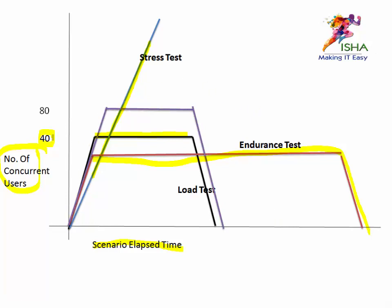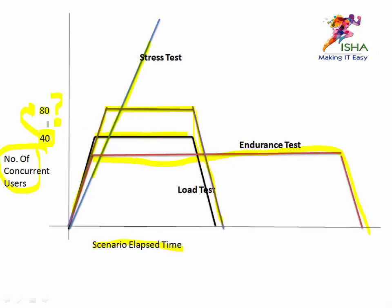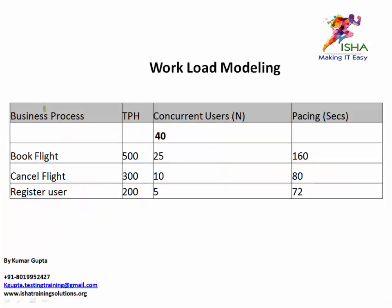Now the next test is the scalability test. As you can see, the load test runs with 40 users, and the scalability test runs with 80 users. Again, for the scalability test you have a ramp up, a steady state, and a ramp down — it's just like a load test but with a bigger user load. The reason for 80 users is that we received an NFR from the client stating there is a 100% user growth in the next one year. That means the load doubles, so that's why I've designed the scalability test with 80 users.